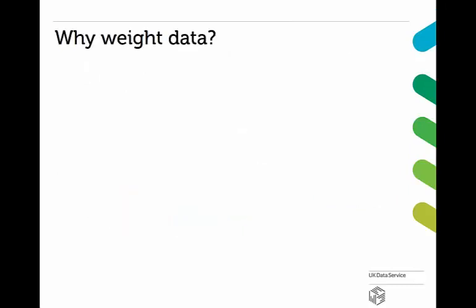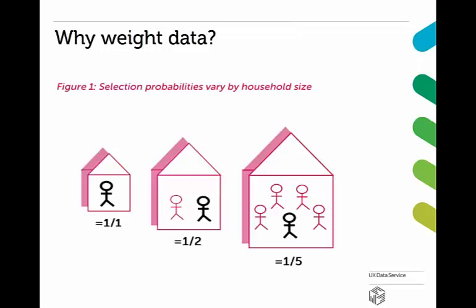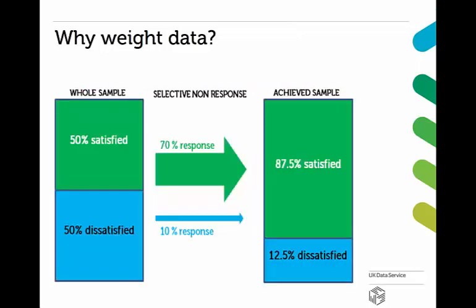So why should we weight data? There are a number of factors which can make survey data unrepresentative of the population. Factors such as the sample design or non-response, which we discussed earlier in this section, can lead to certain groups being under or over-represented in the data. And this can be a problem because if we don't adjust for these factors, our results can be biased or inaccurate. This applies to descriptive statistics as well as estimates from more complex statistical models. Weights allow us to compensate for these factors, and most social survey datasets will include weighting variables.